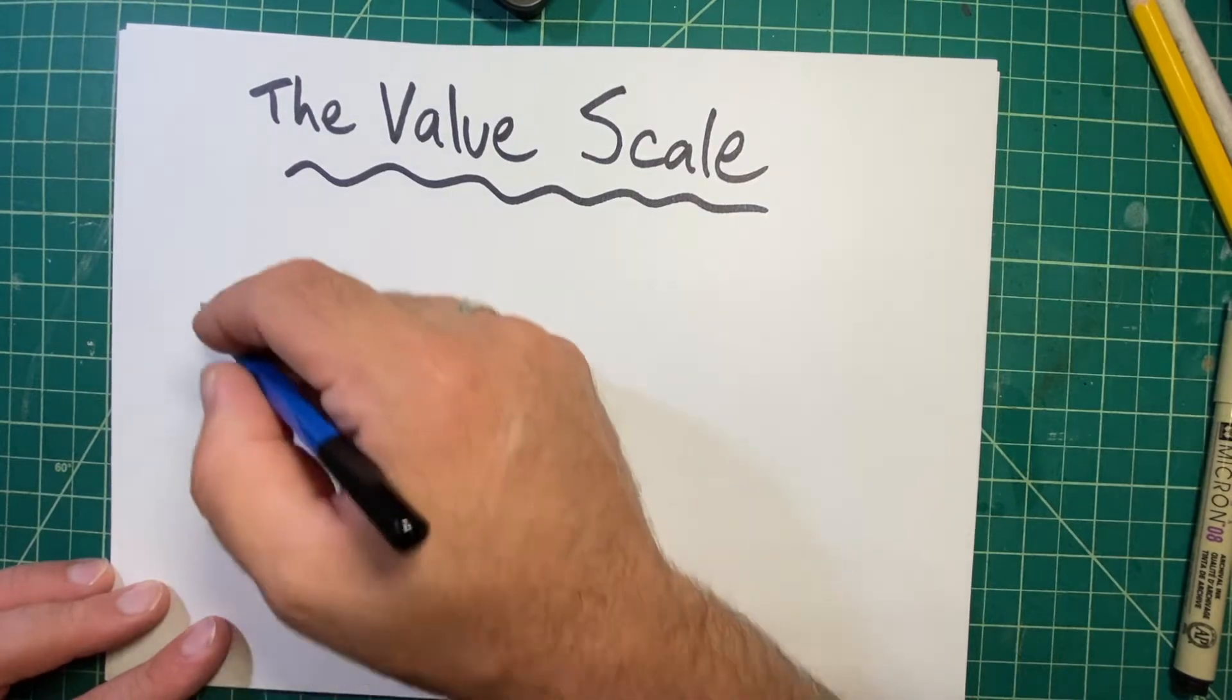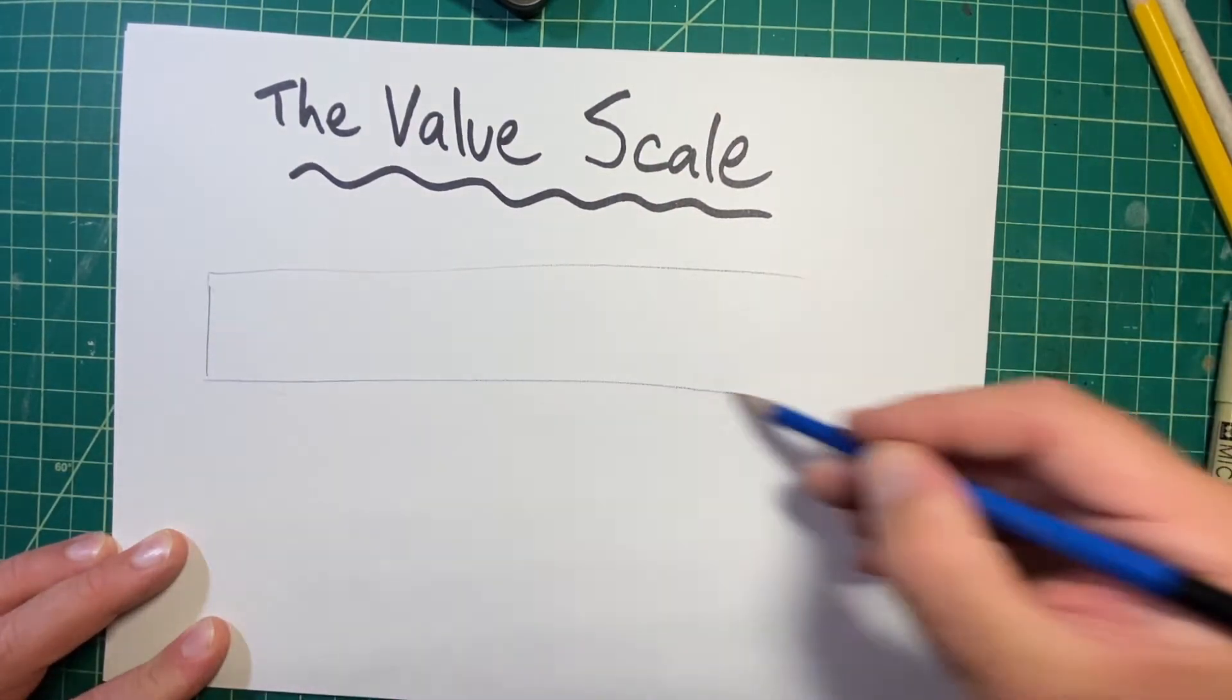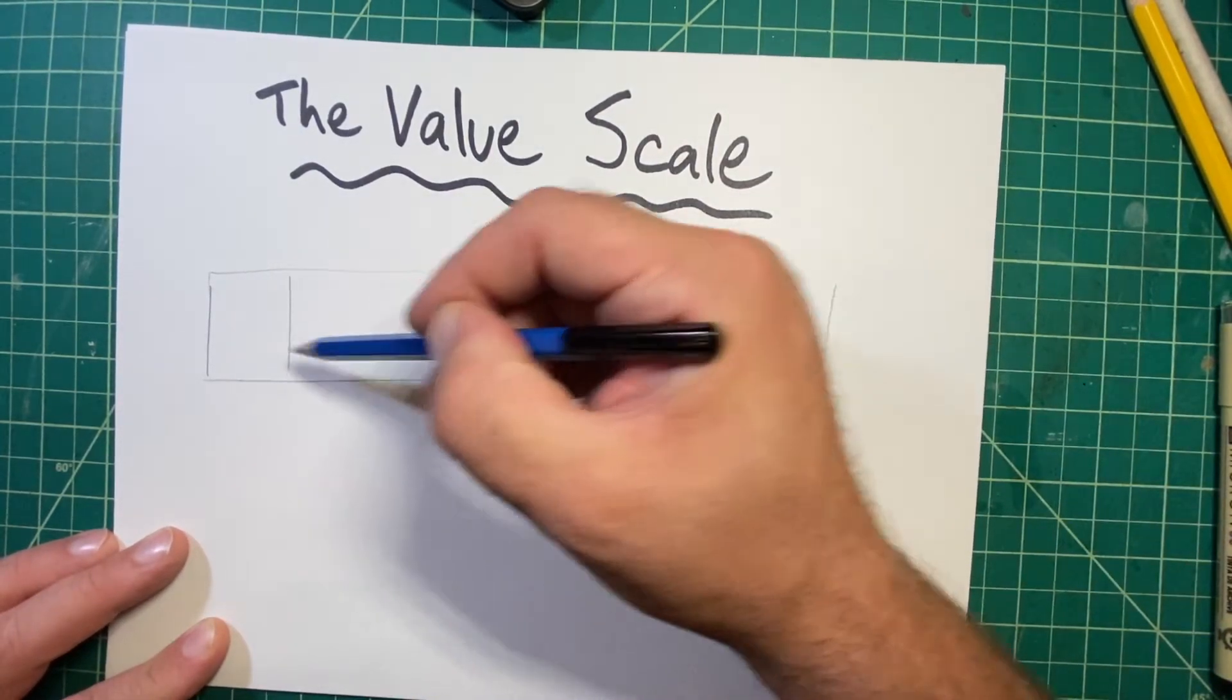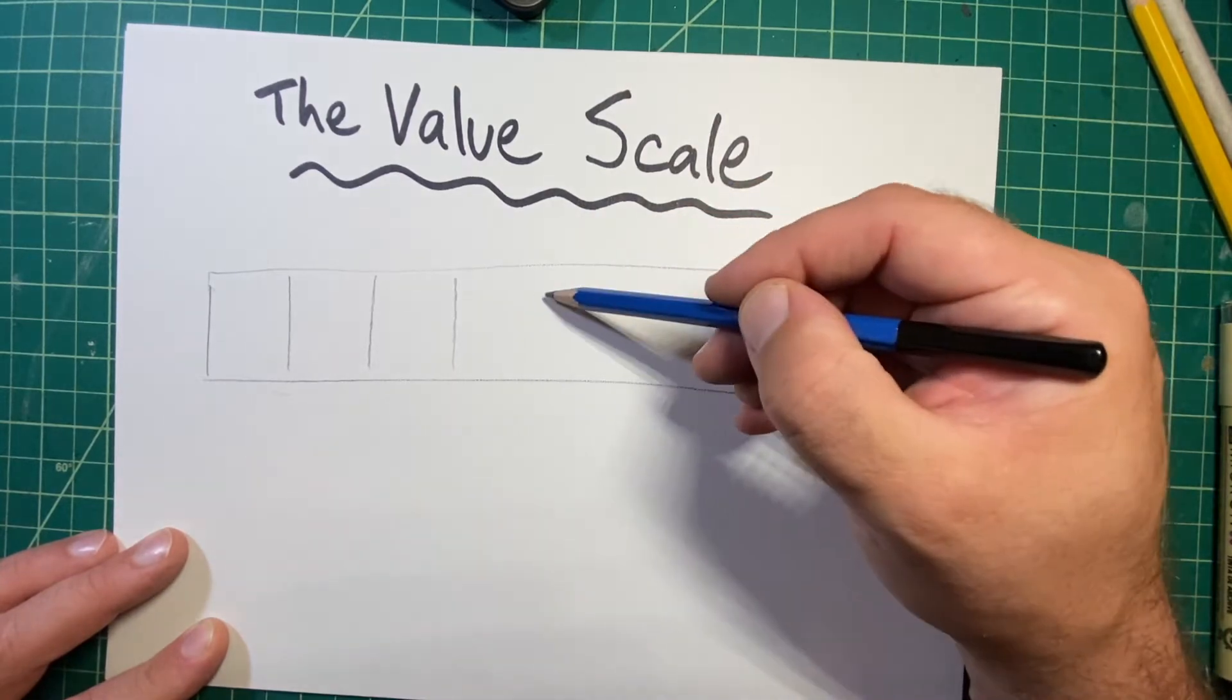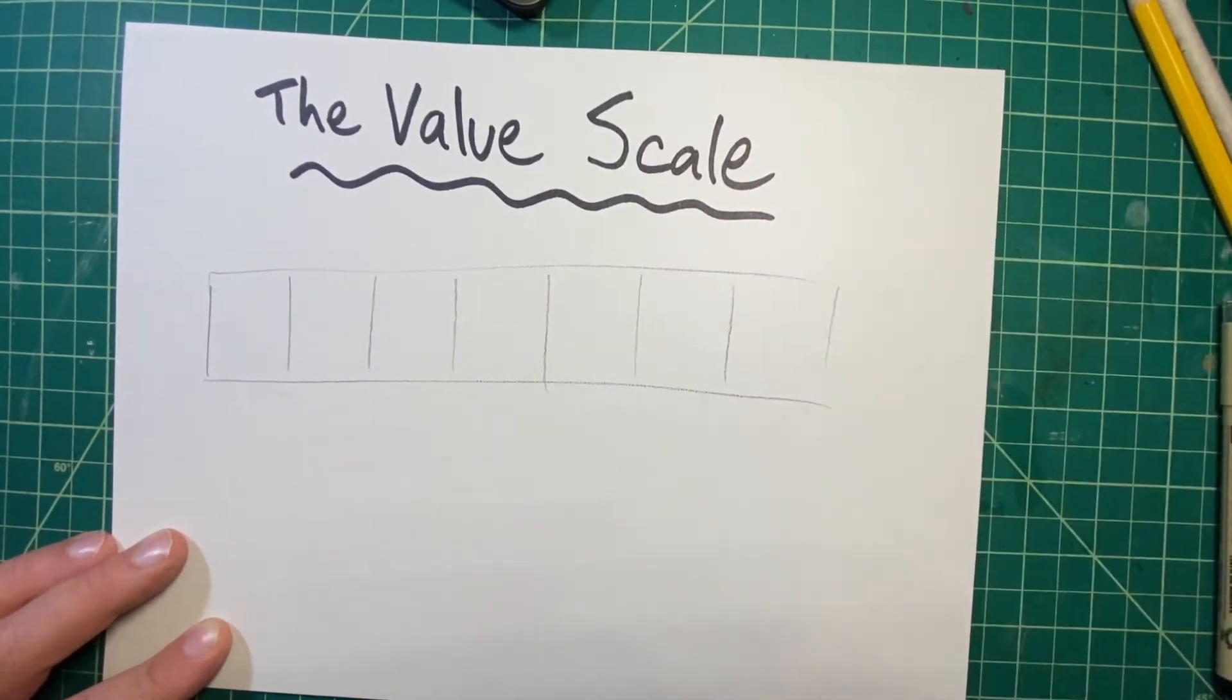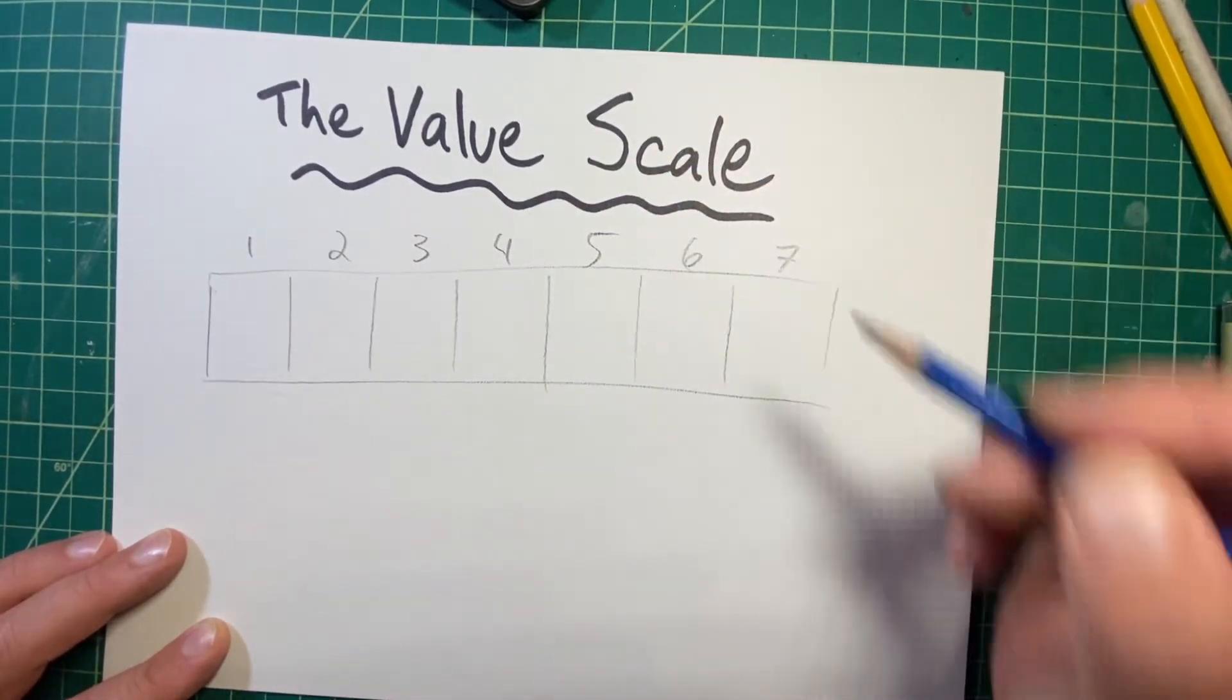In this, I'll be creating seven values. So I'm going to make a light bar across my page. I'm going to break it up into multiple sections. I'm going to number them off: one, two, three, four, five, six, seven.